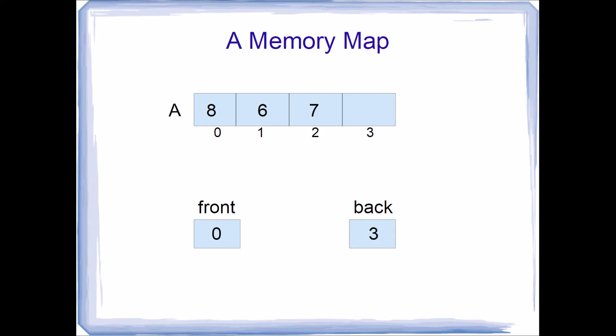Now let's look at some dequeue examples. Our queue currently contains 8, 6, and 7. Front is at element 0, and back is at element 3 — back contains the index of where the next value would go, not the last actual value. To remove 8 from the front, all we have to do is increment front. Now the value at the front of our queue is 6, in element 1, so front contains 1. To remove 6, we increment front again.